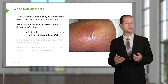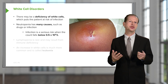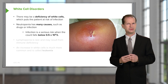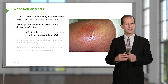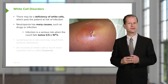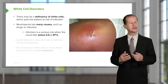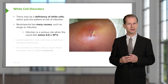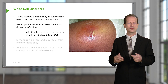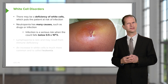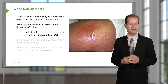The normal neutrophil count is around 2 times 10 to the 9 per litre. But infection becomes a serious risk when that count falls below 0.5. When we're giving chemotherapy to patients with cancer, we can often see it below 0.1, and here patients become at high risk of severe infection.